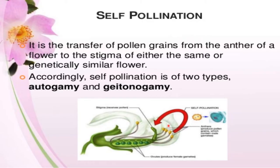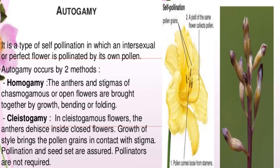Self pollination is the transfer of pollen grains from the anther to the stigma of either the same or a genetically similar flower. Accordingly, self pollination is of two types: autogamy or geitonogamy. Autogamy is a type of self pollination in which a bisexual or perfect flower is pollinated by its own pollen.